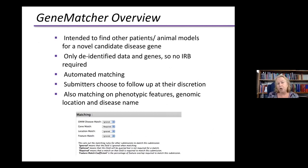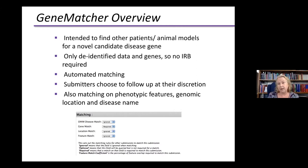All you have to put into GeneMatcher is the name of a gene. You can add phenotypic information about the patient, but nothing identifiable. When you submit, it looks for anyone else who submitted the same gene and automatically generates an email to both or more submitters, who can then choose to follow up at their discretion.